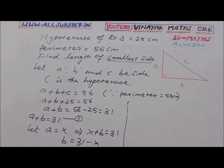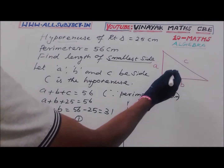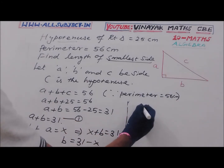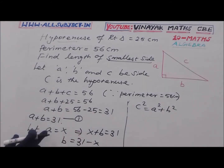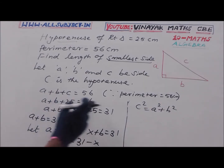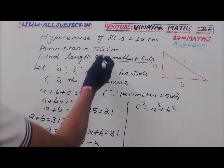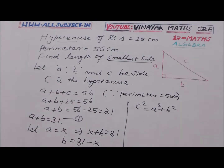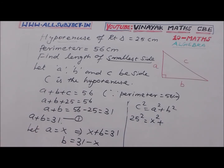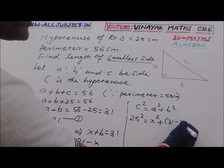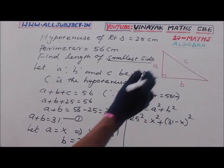This is a right angle triangle, so by Pythagoras theorem, C squared equals A squared plus B squared. Substituting the values, with C equal to 25 and A equal to X: 25 squared equals X squared plus (31 minus X) whole squared.